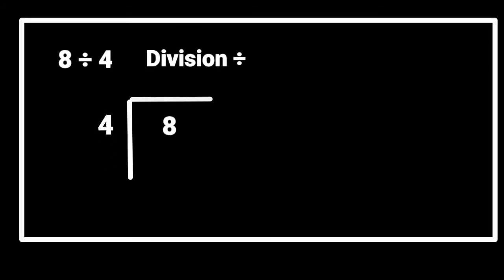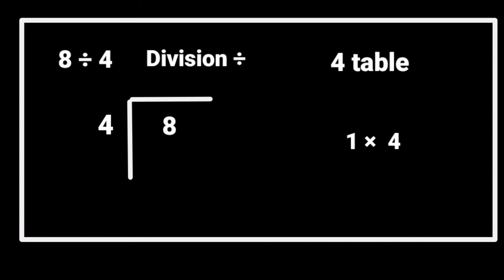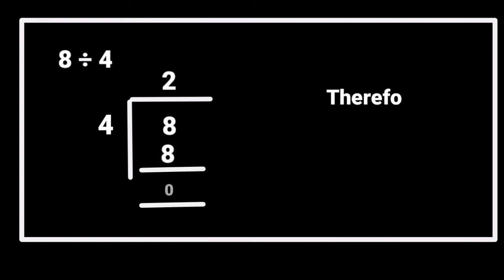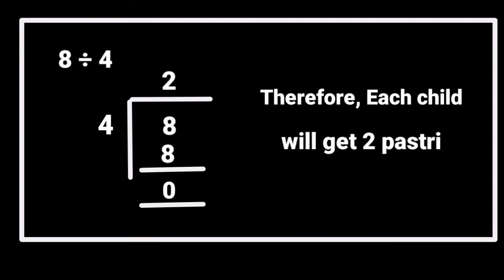8 divided by 4. Which table can we use for this sum? We can use the 4th table. Join with me: 1 four is 4, 2 fours are 8. Therefore, each child will get 2 pastries.